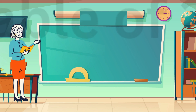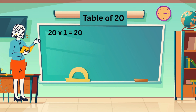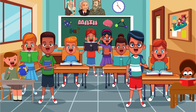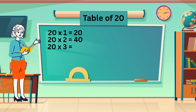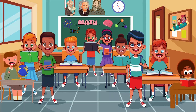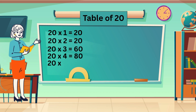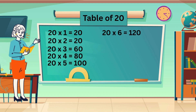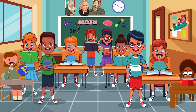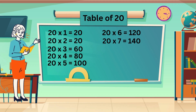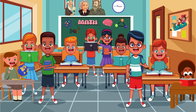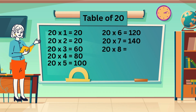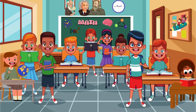Table of 20. 20 ones are 20. 20 twos are 40. 20 threes are 60. 20 fours are 80. 20 fives are 100. 20 sixes are 120. 20 sevens are 140. 20 eights are 160.